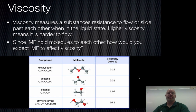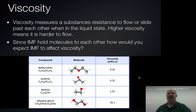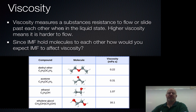Our next topic is viscosity. Viscosity measures resistance to flow. Things that are very viscous are like maple syrup or honey. Things that have low viscosity are like gasoline or cleaners — those tend to have very low viscosity and flow really easily.